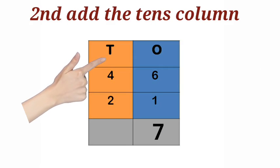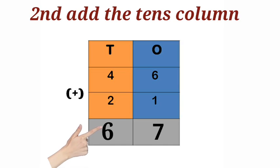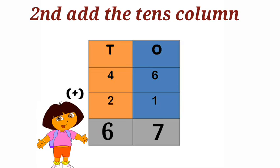Next, second add the tens column. Four plus two is equal to six. The answer is six. Six is a one-digit number. So the total sum is sixty-seven. Did you understand students?